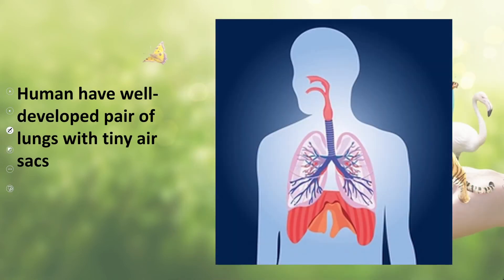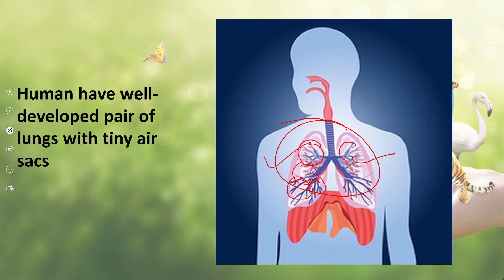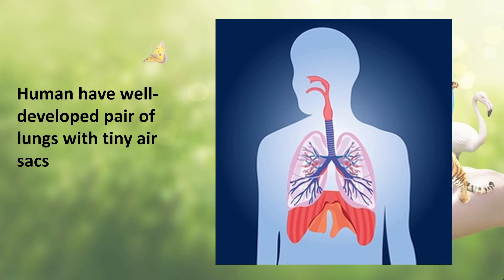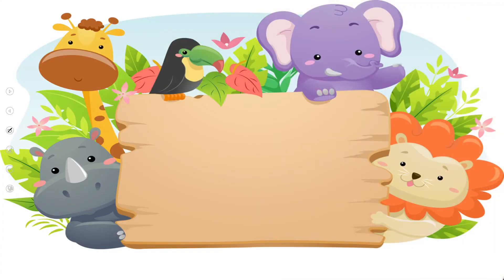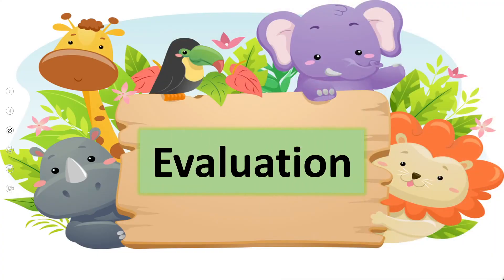Humans have well-developed lungs — a pair of lungs, one on the right and one on the left side. They have tiny air sacs inside, divided into tubes, which make breathing very efficient and effective.